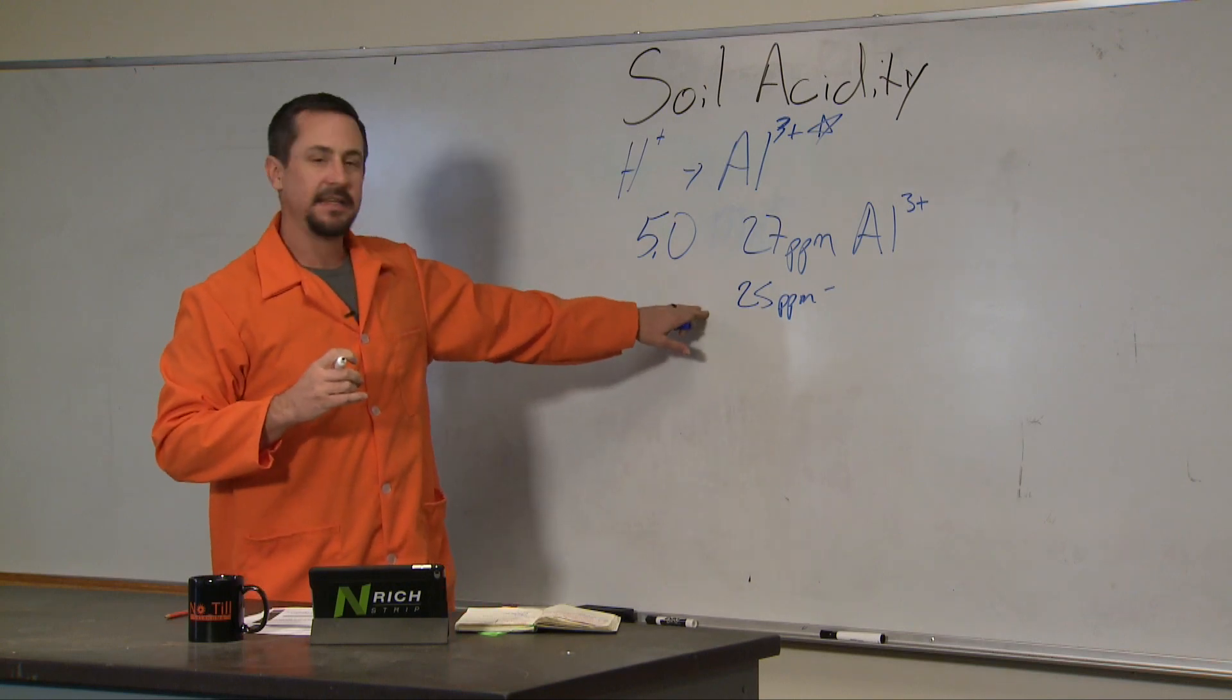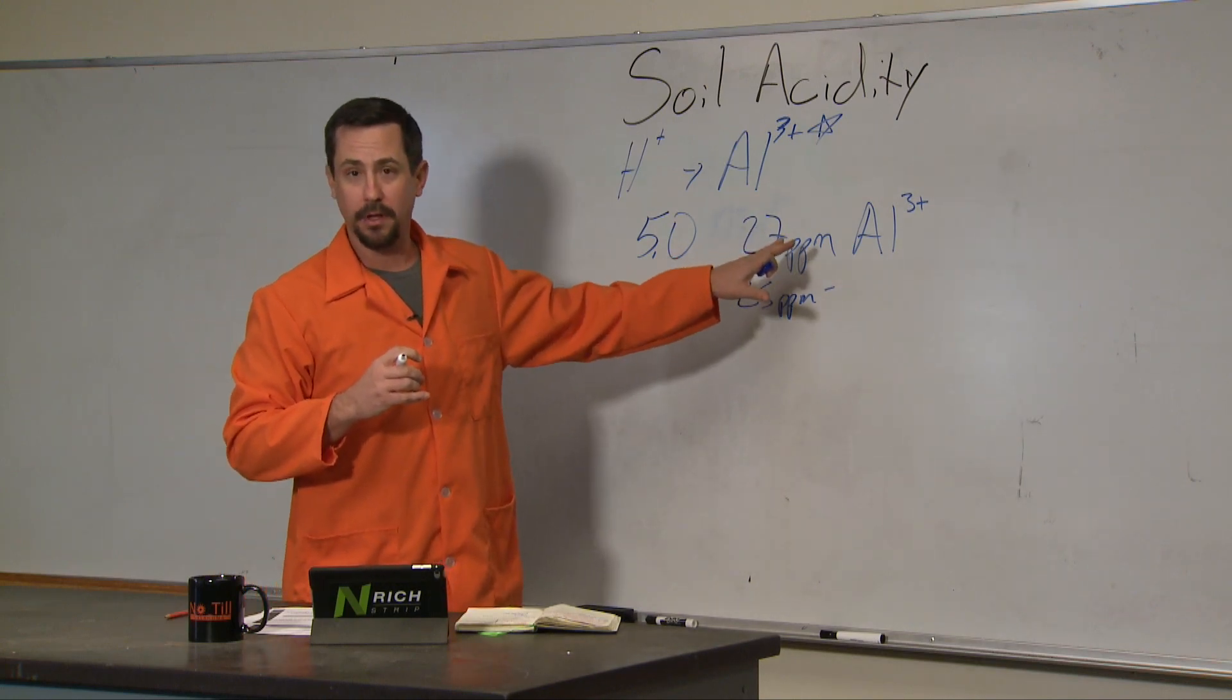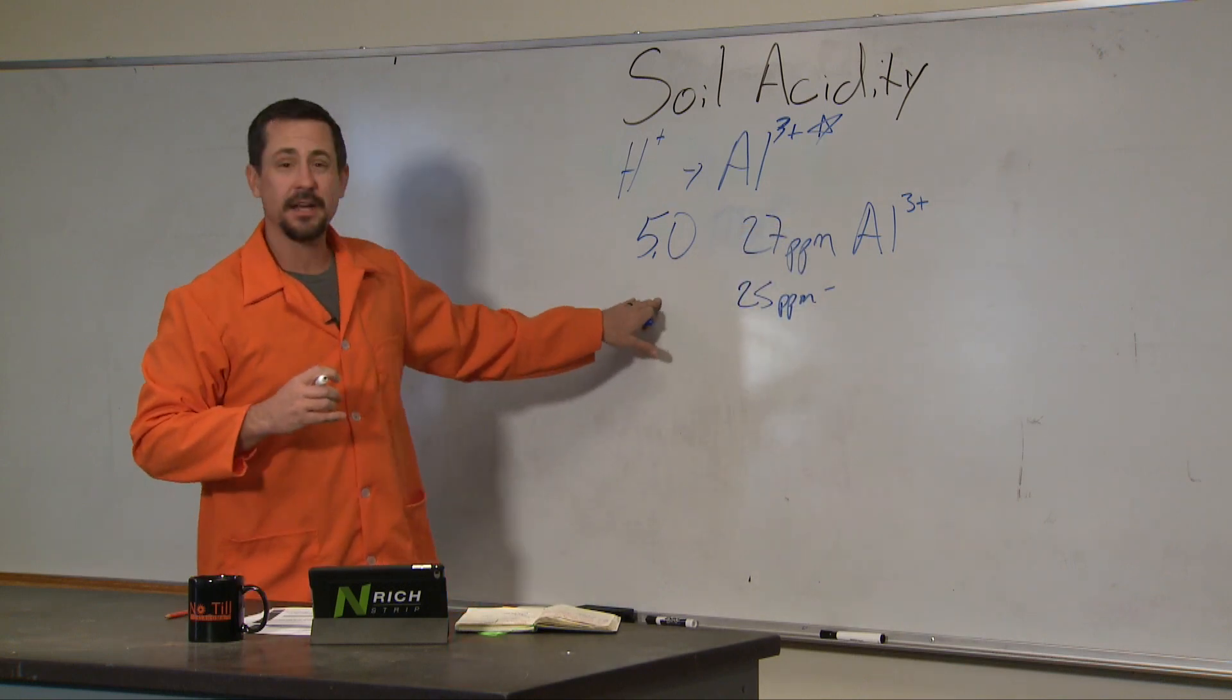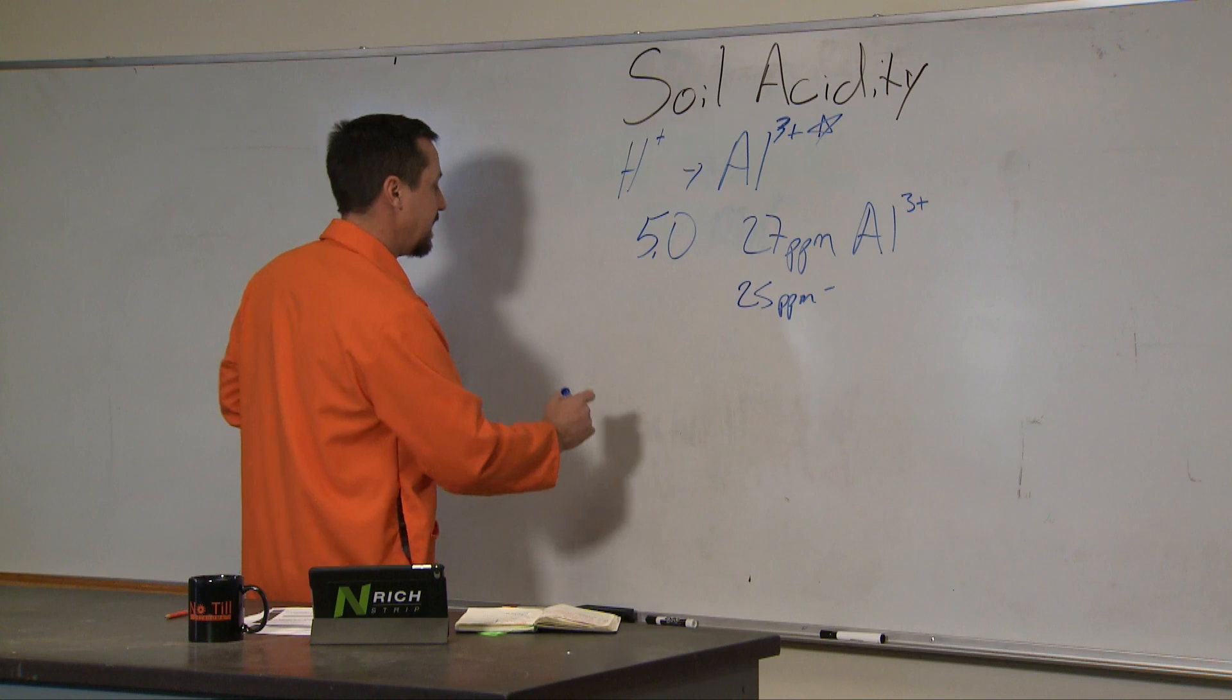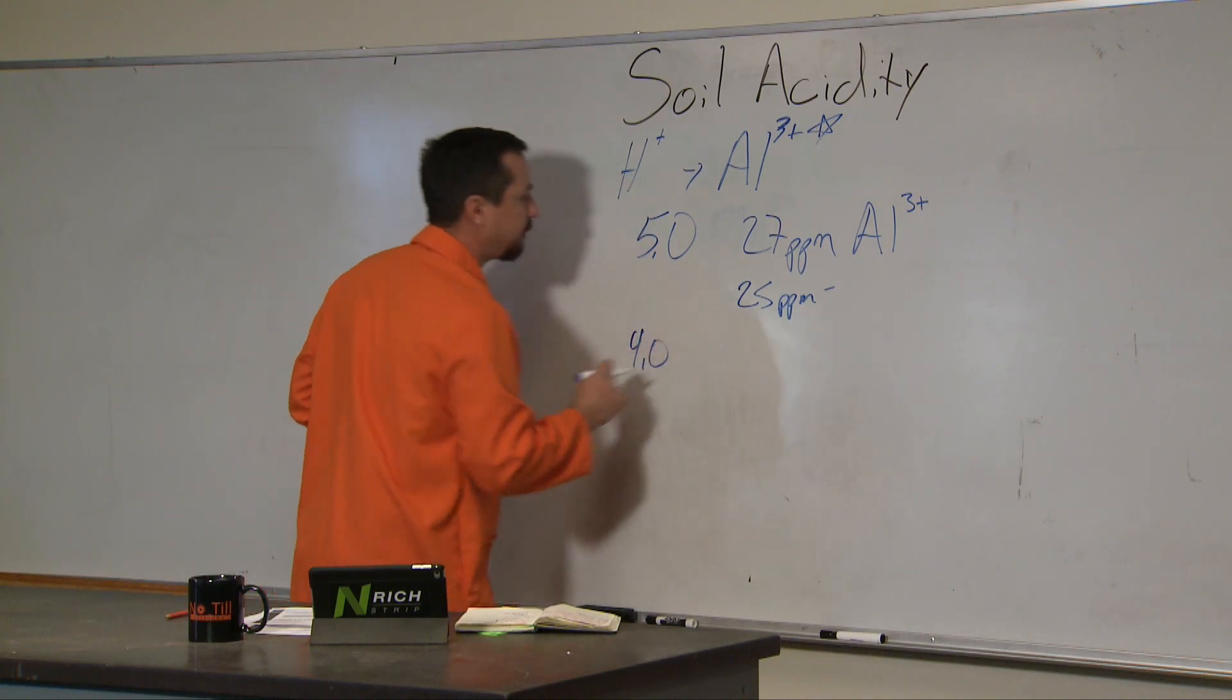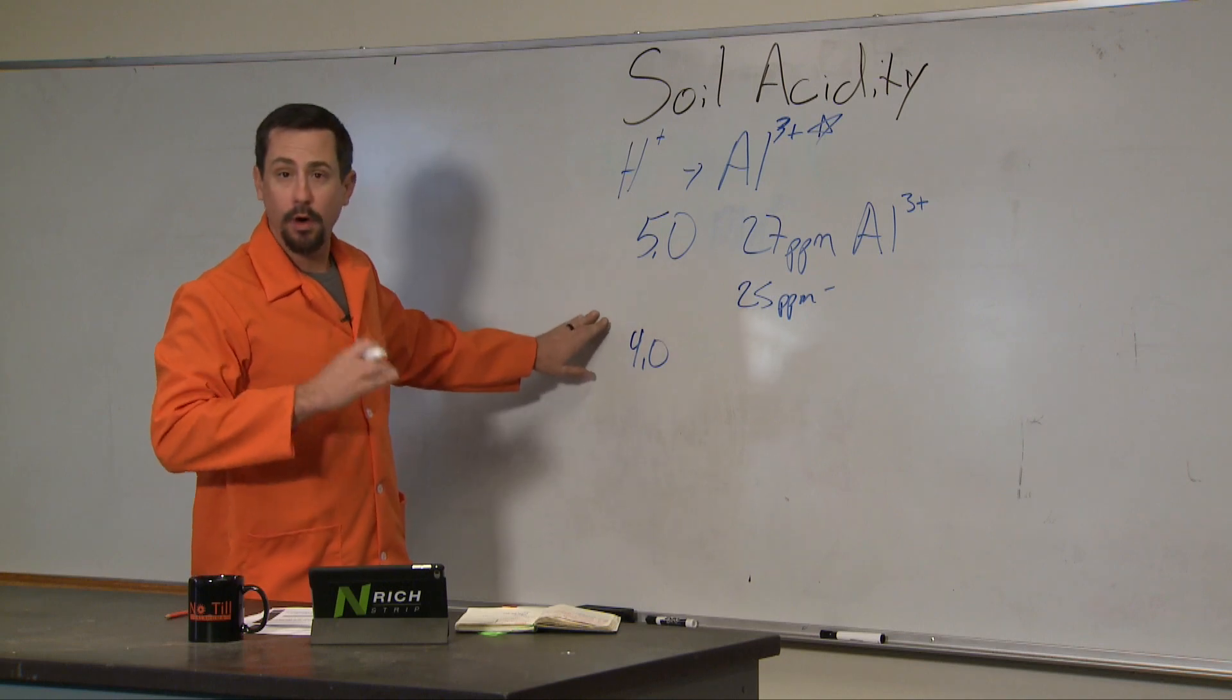That means we're getting significant impact upon the plant from this aluminum 3+. The big thing to understand is that when we go from a pH of 5 to a pH of 4, that one pH unit step is huge in what happens to aluminum.